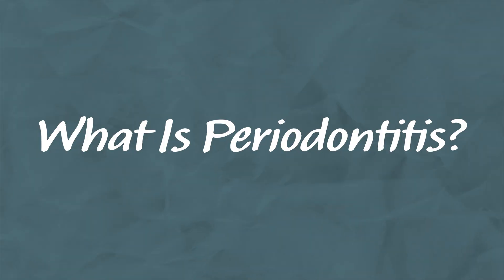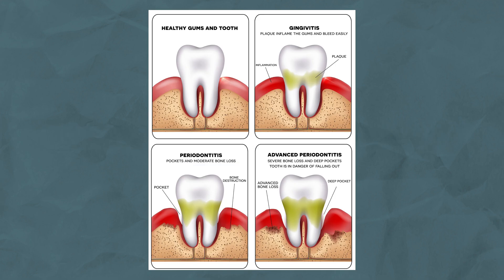If gingivitis is left untreated, in some cases it may lead to full-blown gum disease, also known as periodontitis. Periodontitis is a destructive form of gum disease where you have loss of bone and gum tissues that surrounds and supports your teeth. The initiator of this is bacteria in dental plaque and your body's natural protective response to these bacteria and their toxins. The amount of bone and gum tissue that you may lose depends on how long you've had the condition, your risk factors, and your body's natural response to the type of bacteria in your dental plaque.